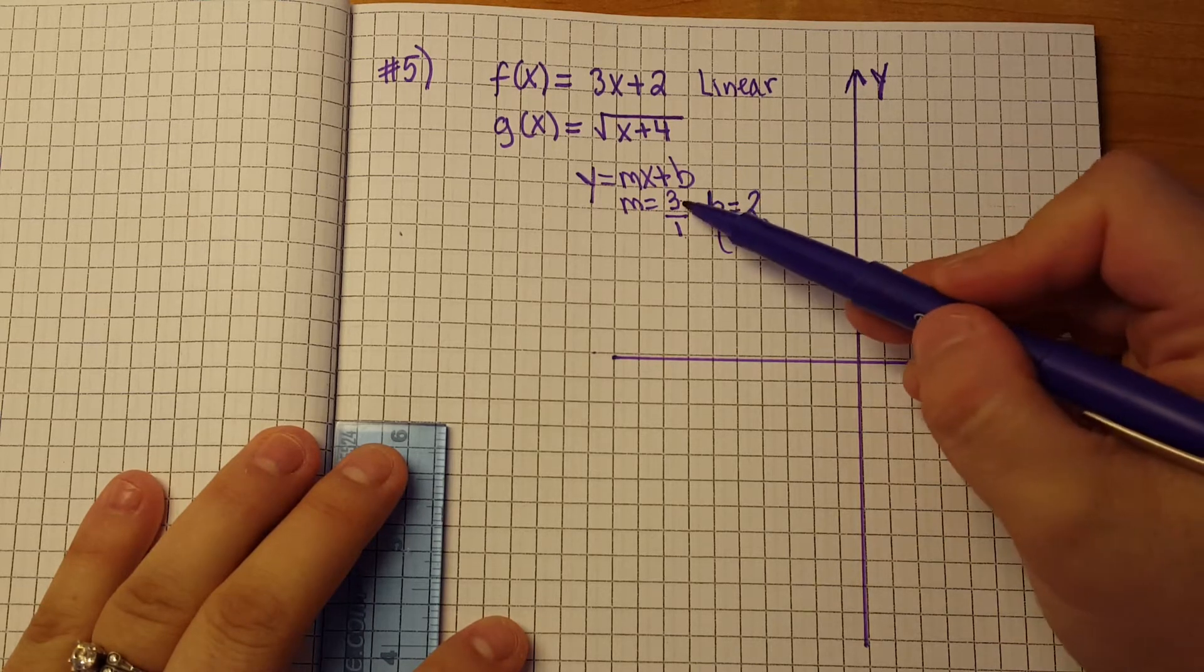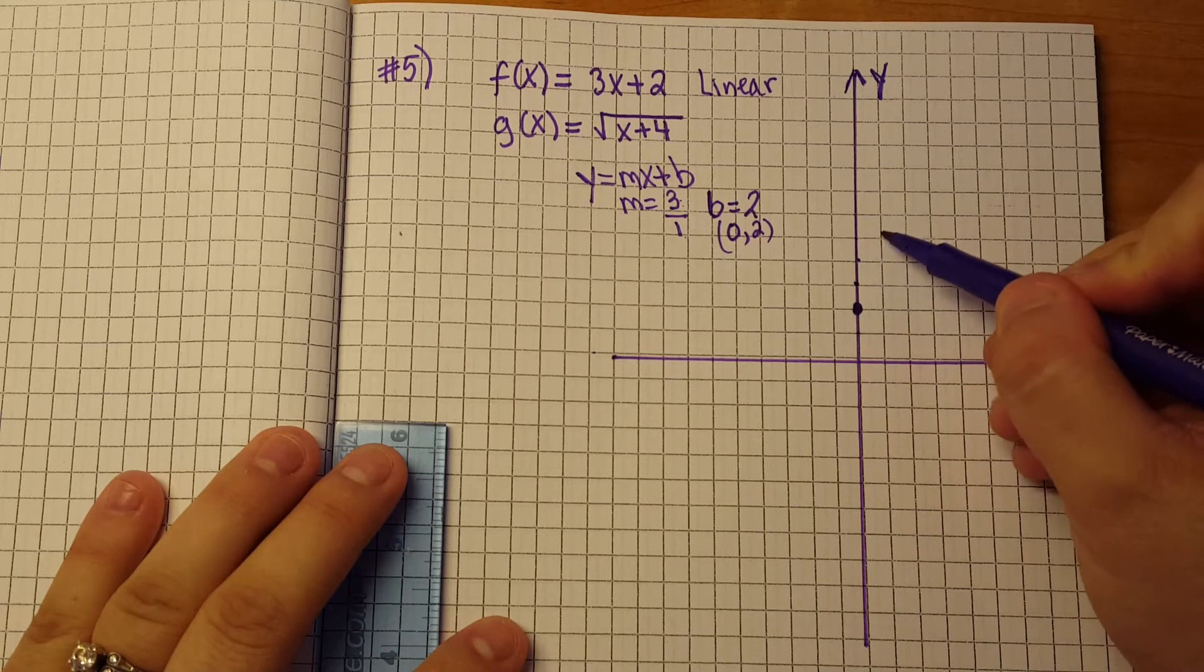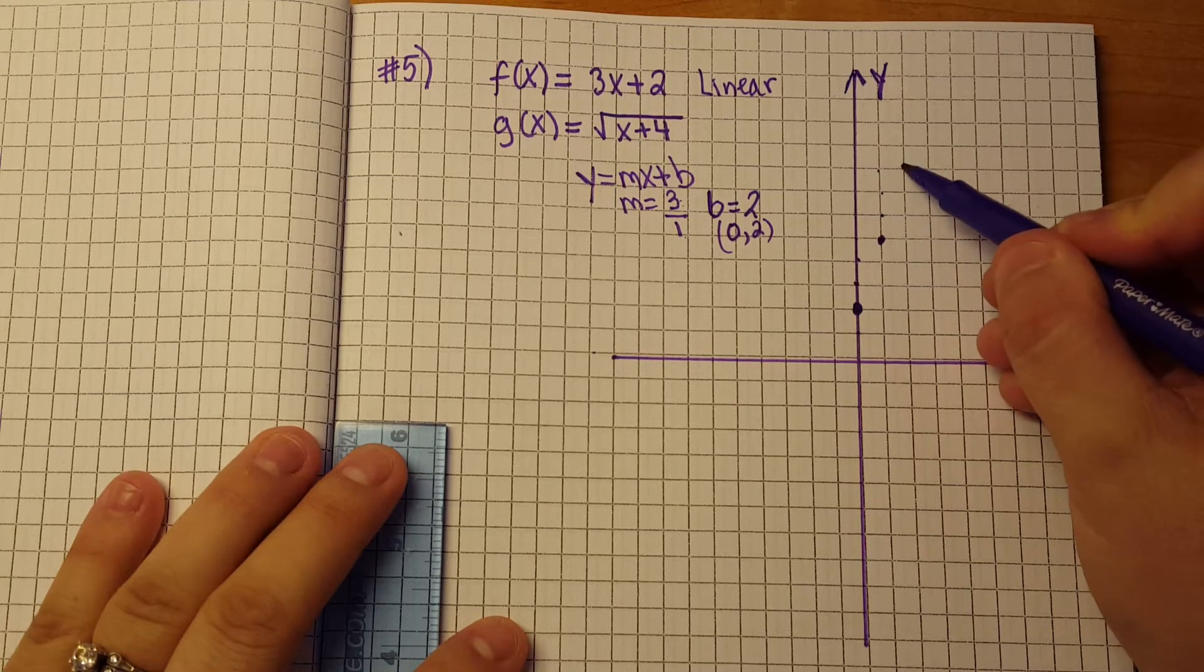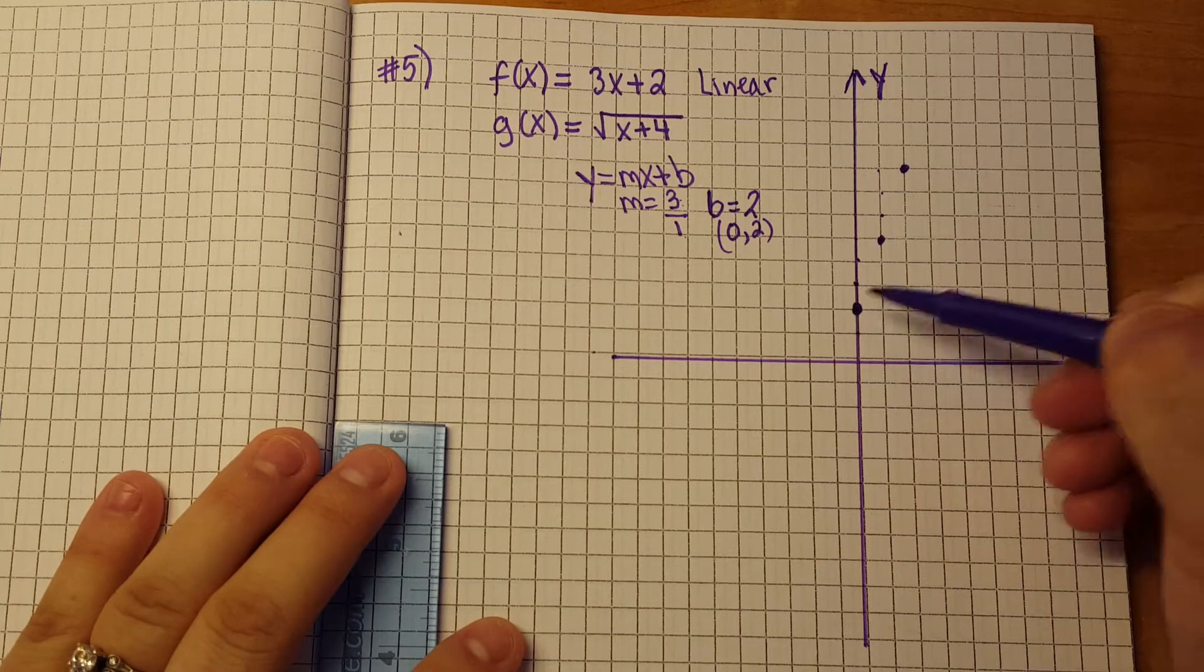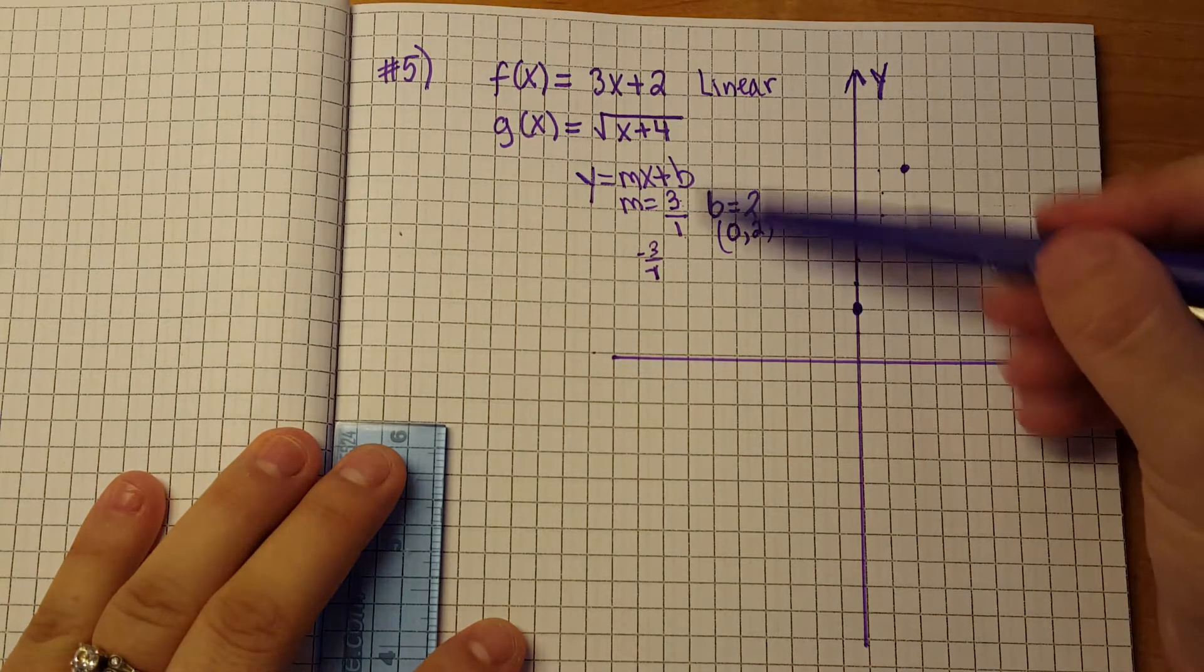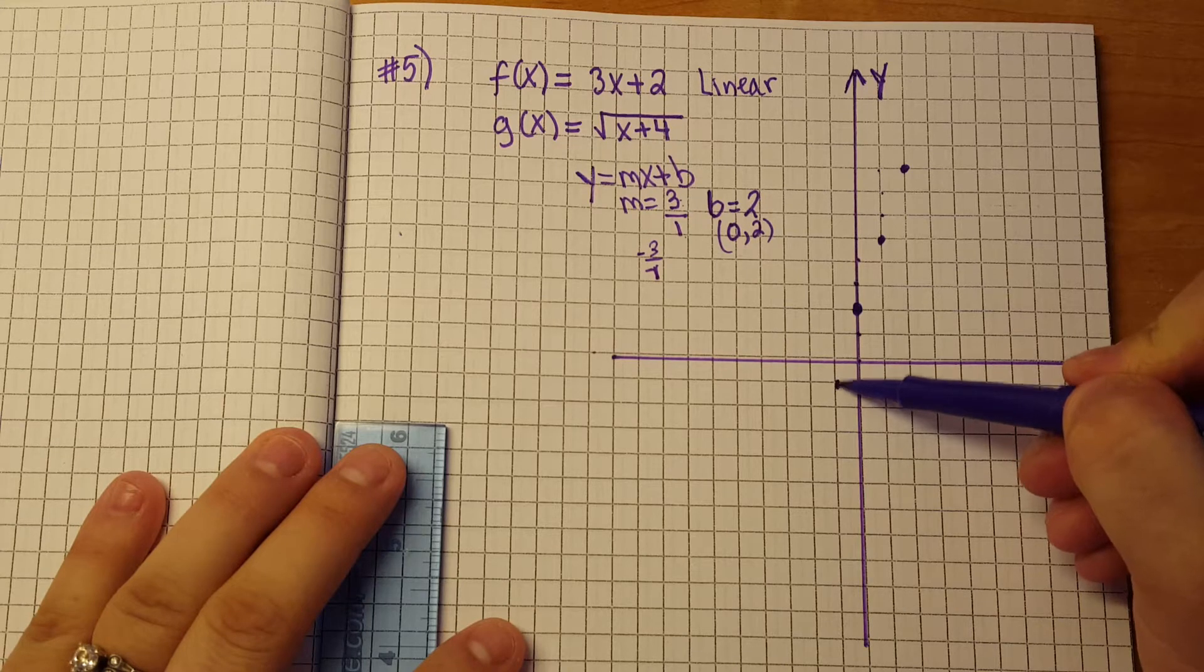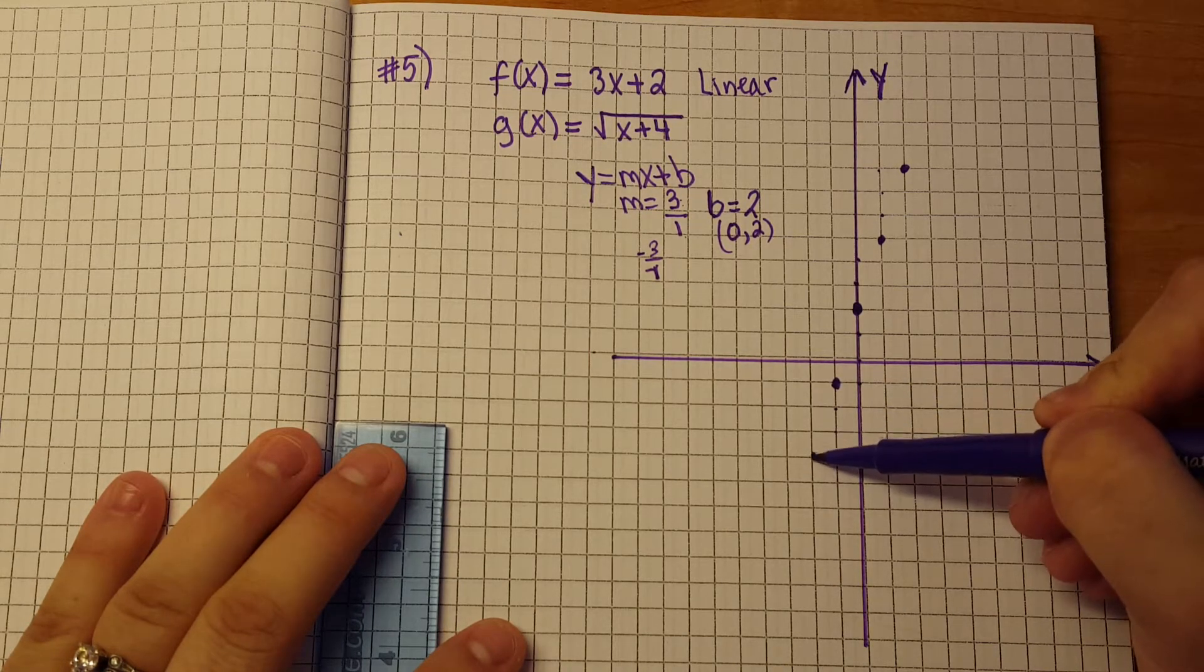We're going to use our slope which is rise 3, run 1 so we're going to go up 3, 1, 2, 3 over 1. Up 3, 1, 2, 3 over 1. Now we know that starting from the y intercept is the same thing as having a slope of negative 3 over negative 1 is the same thing as saying 3 over 1. So we could go down 3, so 1, 2, 3, left 1, 1, 2, 3, left 1.